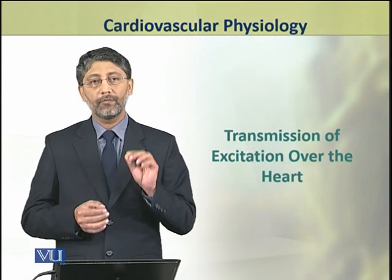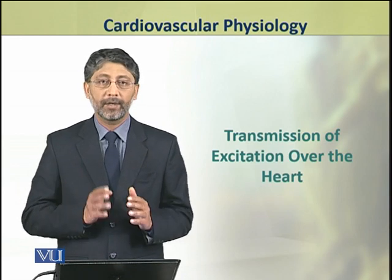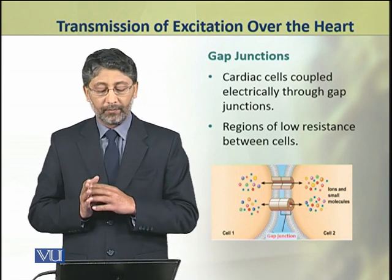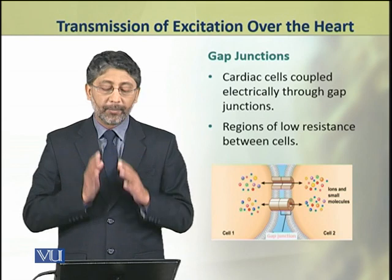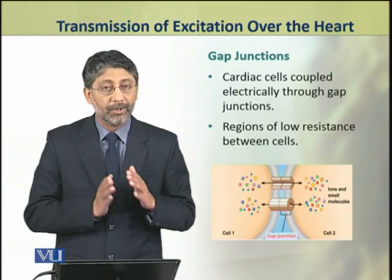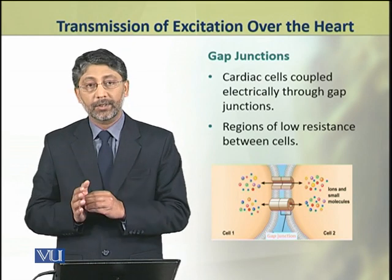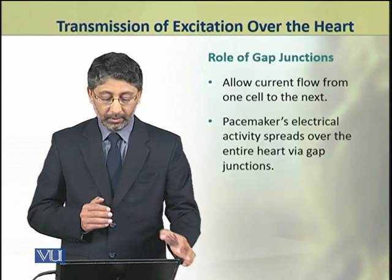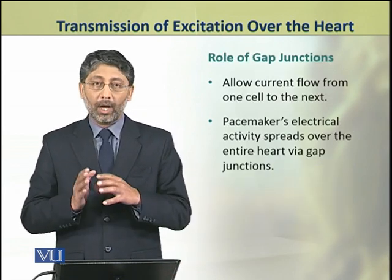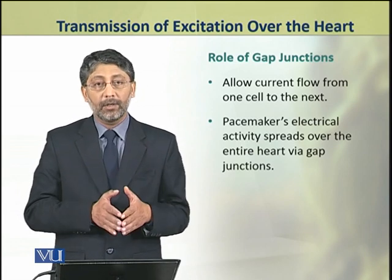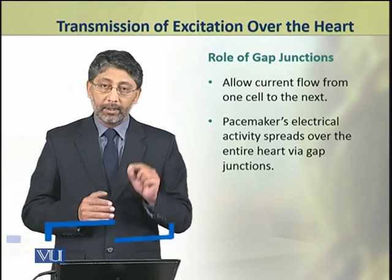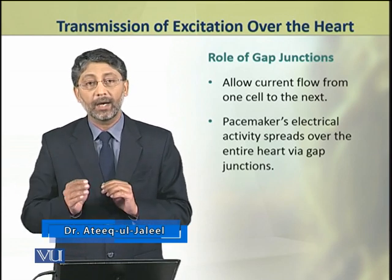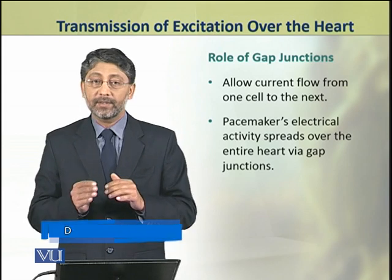In this topic we shall discuss the transmission or spread of excitation over the heart. The cardiac cells are coupled electrically through gap junctions. These gap junctions are the regions of low resistance between the cells, which allow the current to flow from one cell to the next. The pacemaker's electrical activity spreads over the entire heart because of these gap junctions.